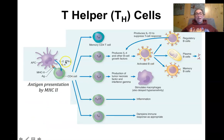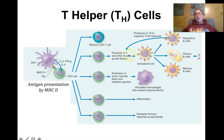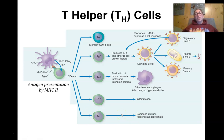When T helper cells get activated by antigen presentation, they can differentiate and stimulate all these other kinds of T cells. T helper cells can activate B cells, which then produce antibodies or become memory cells. They can also become memory T cells themselves, or become regulatory T cells, which dampen or turn down the immune response when it's no longer needed. B cells also make memory cells.